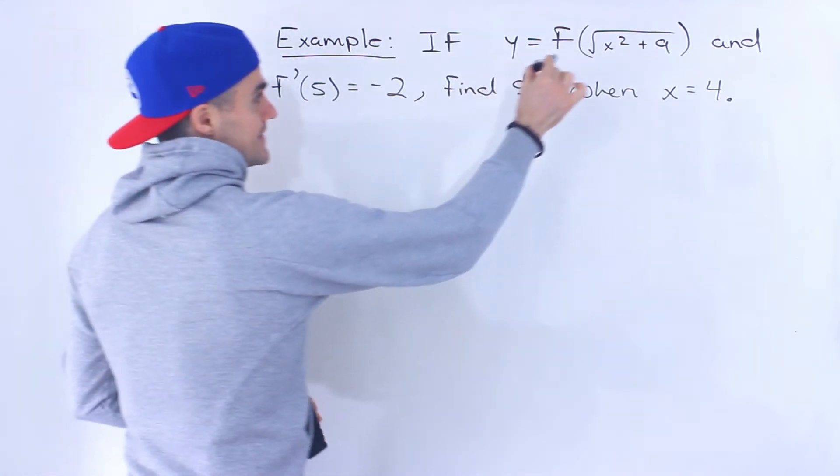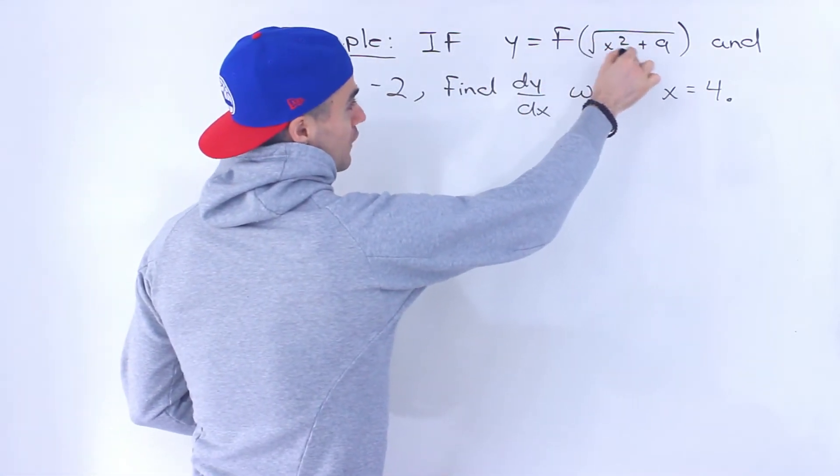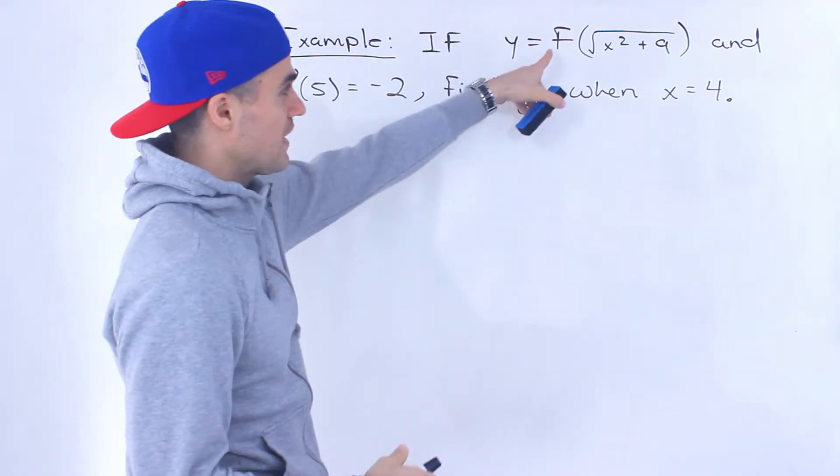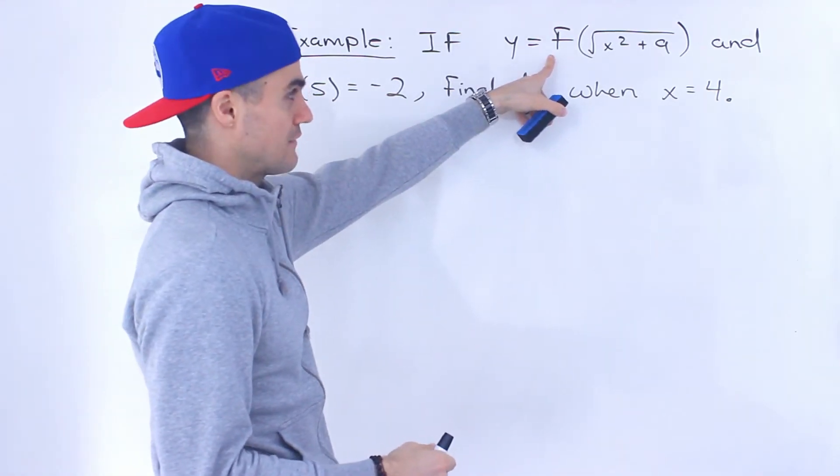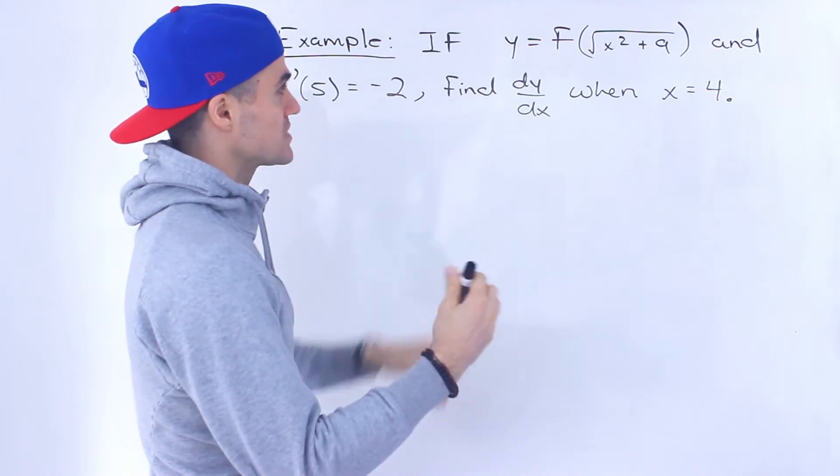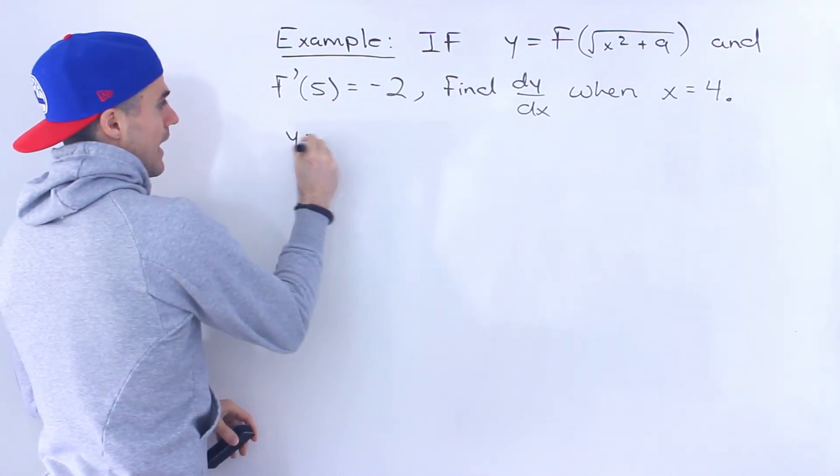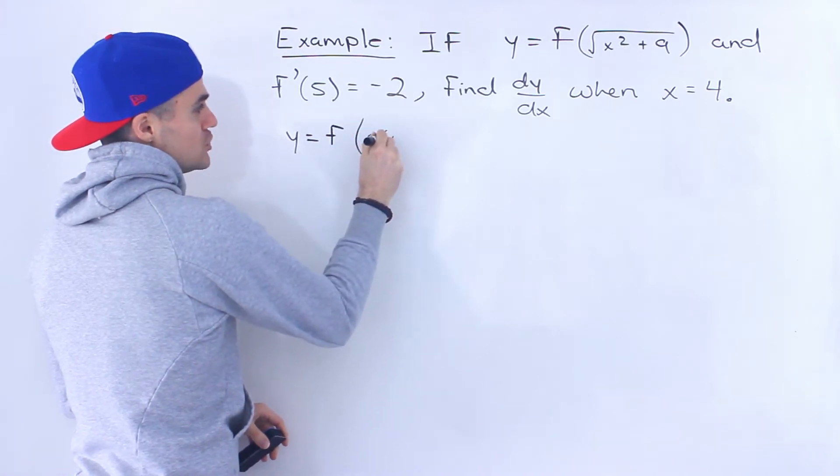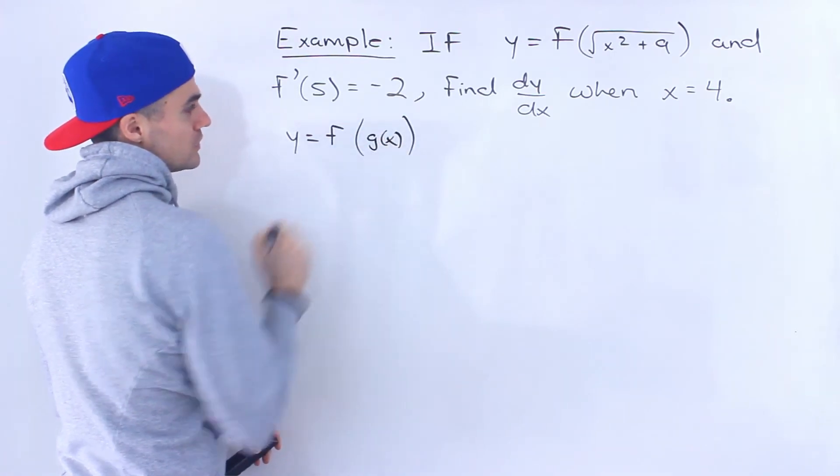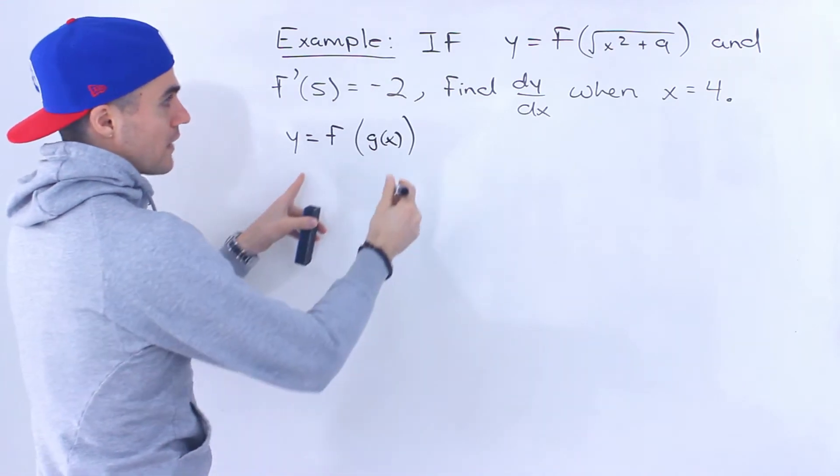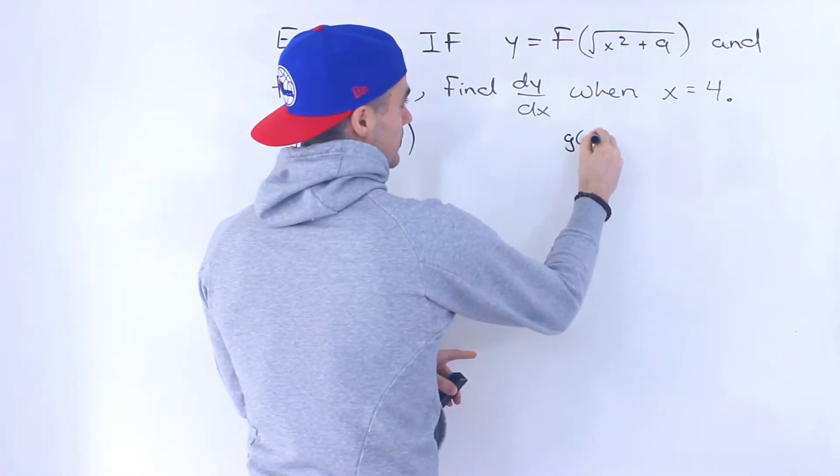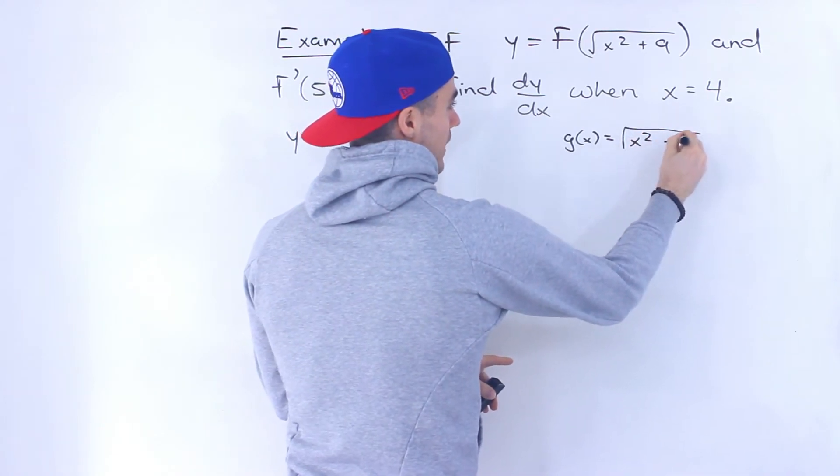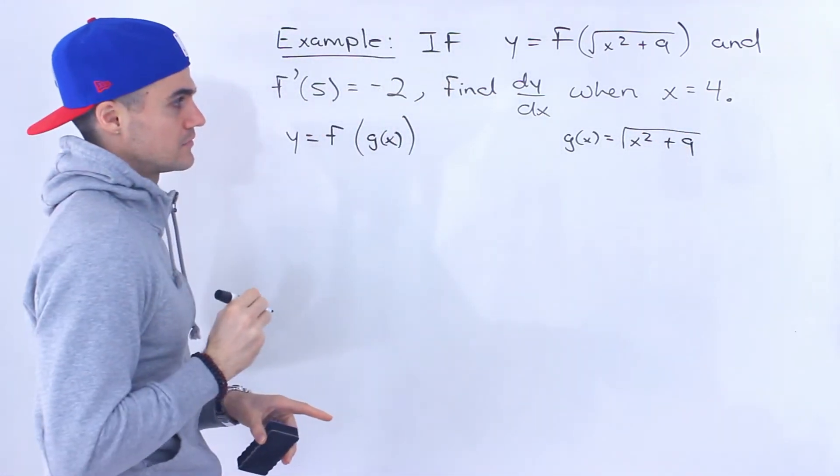So notice that in this case we actually have another function, the square root of x squared plus 9, within the function f of x. So notice that this is a composite function. So I'm actually going to take this and I'm going to rewrite it as f of g of x. Let's keep it really general where g of x, let's write this on the side, is that function the square root of x squared plus 9 like that.